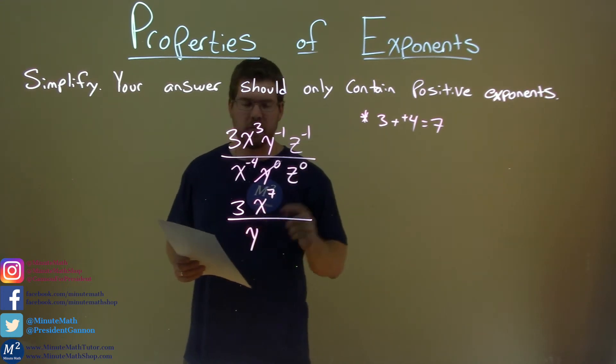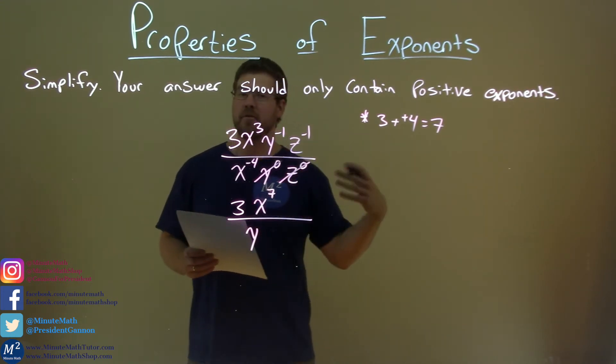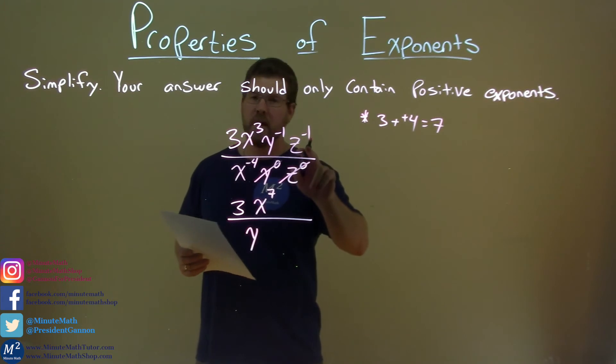Same thing with the z. They're trying to trick us here. z to the 0 power is just 1. Leave it as such. Same operation happens.